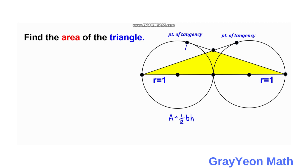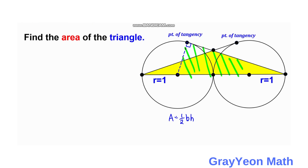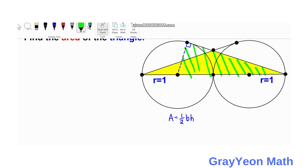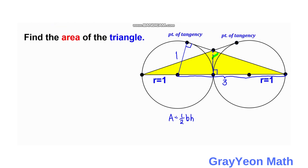We draw a line from the left point of tangency to the center of the left circle. Since this is a point of tangency, this angle is 90 degrees, and therefore this triangle is a right triangle. The hypotenuse is 3 units — since the radius is 1, the distance from the tangency point to the far circle center is 3. Drawing another line from the intersection of the two tangent lines forms another right triangle.